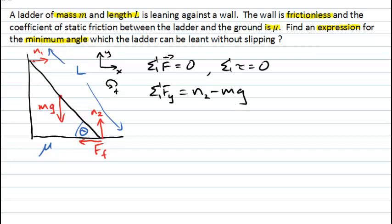So that's all of our y components of force, and that tells us that the normal force from the floor onto the ladder must equal the weight force pulling the ladder downwards: N₂ = mg.